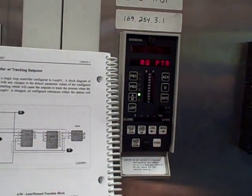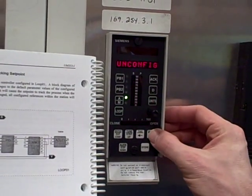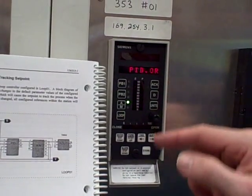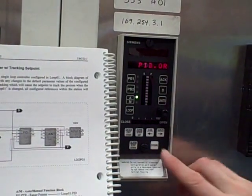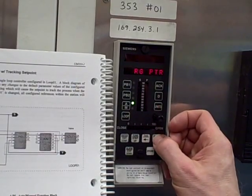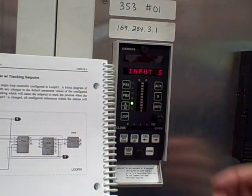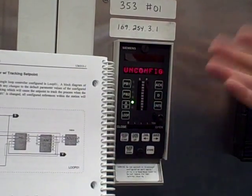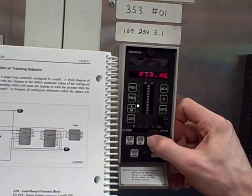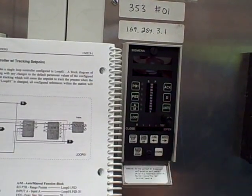Stepping into analog output 2, I go into range pointer. I've got to tell it where it gets its range pointer from. I can select all the available range pointers, and the one that the other analog output block had was PID dot OR, so I'm going to select that one and store. Then stepping up to the next parameter in A out 2, which is its input S — it wants to know where it gets its signal from. Stepping down to that, it's unconfigured. I want to choose auto manual dot 01, same as the other analog output block, and I store that.